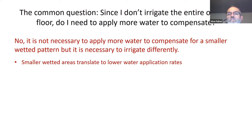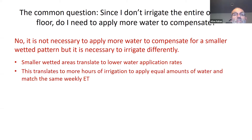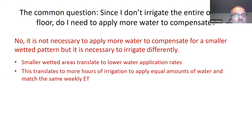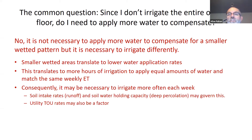Smaller wetted areas translate to lower water application rates. This translates to more hours of irrigation to apply equal amounts of water and match the same weekly ET as if you were using a solid set sprinkler or some other type of full coverage irrigation system. Consequently, it may be necessary to irrigate more often each week. The soil intake rates may cause runoff, and the soil water holding capacity may also govern whether deep percolation occurs. You'll also want to consider your time-of-use rates as a factor.